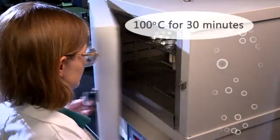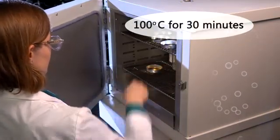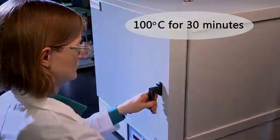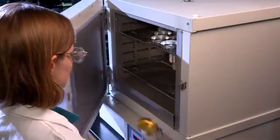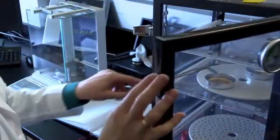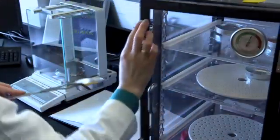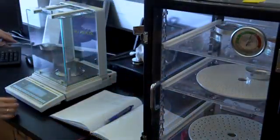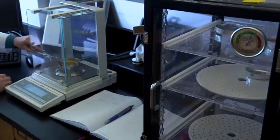Once dry, place the dish in an oven at 100 degrees Celsius for 30 minutes. Next, remove the pan from the oven and place in a desiccator to cool to room temperature. Once cool, place on the balance and weigh.